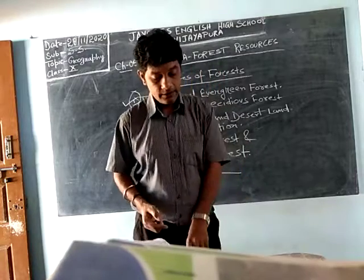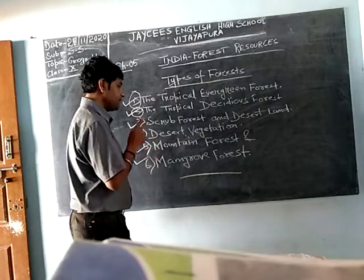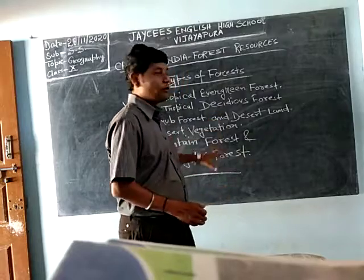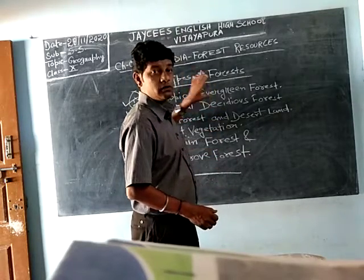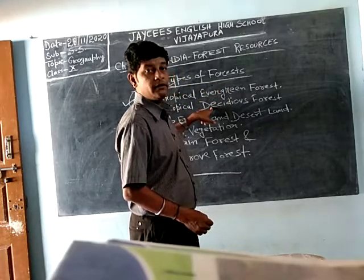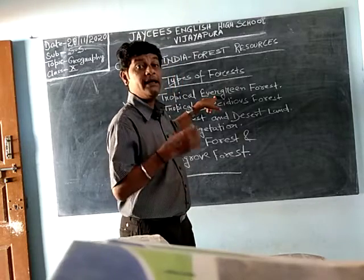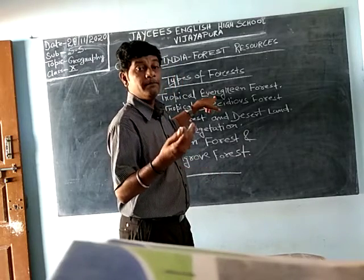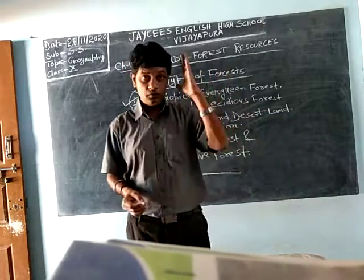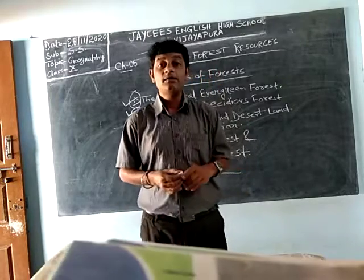In the next video we will be discussing scrub forest and desert land, desert vegetation, mountain forest, and mangrove forest. These are smaller topics. The main types — and the ones from which questions commonly appear — are the tropical evergreen and tropical deciduous forests. Remember: the other name for deciduous forest is monsoon forest, and evergreen forests are so called because the trees don't shed their leaves throughout the year. Thank you and see you in the next video.